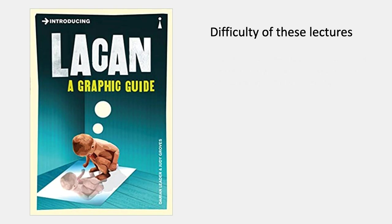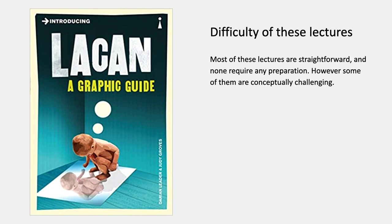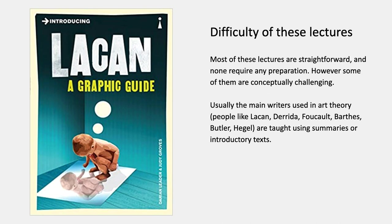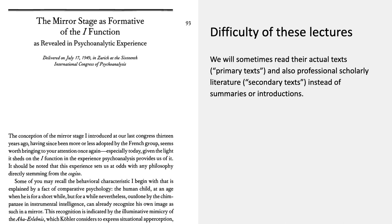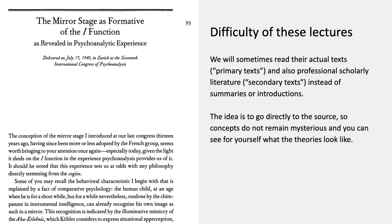Most of these lectures are straightforward because they're meant as references, and none of them require any preparation or outside reading — but a couple are conceptually challenging. Usually the main theorists used in art writing — people like Lacan, Derrida, Foucault, Barthes, Butler, Hegel — are taught to undergraduates using summaries or introductory texts. But in these lectures, we're going to sometimes read small portions of the actual texts written by those people. These actual texts are called primary texts. We're also going to use professional scholarly literature — secondary texts like JSTOR — instead of summaries and introductions.